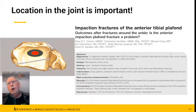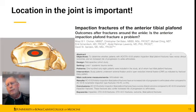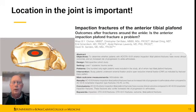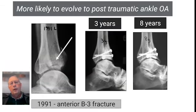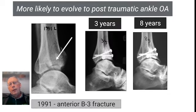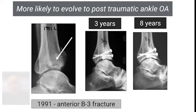Understanding the role of where the injury is in the joint: the normal ankle joint loads anteriorly, slightly laterally, and injuries of the front of the ankle joint — impaction injuries, B2 and B3 fractures — are bad injuries. The posterior malleolus is a bad injury because it leads to subluxation. But if you're looking at straight articular step-offs, you want to avoid them in the front of the joint. Here's an anterior B3 fracture with rapid and then consistent progression to post-traumatic osteoarthritis at three and eight years.